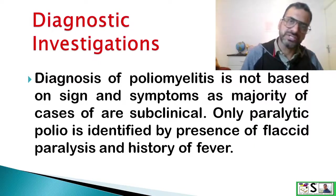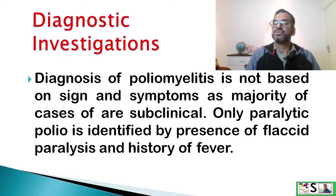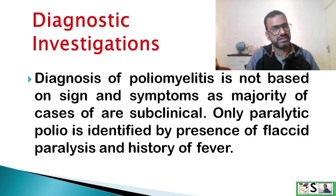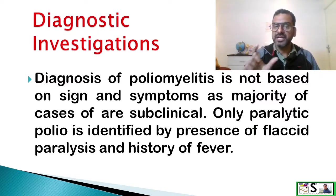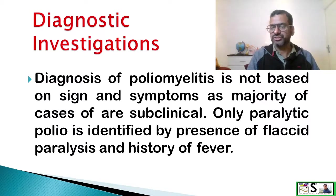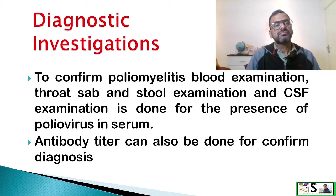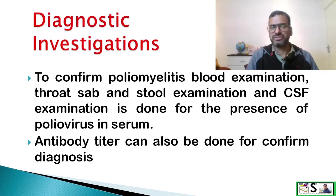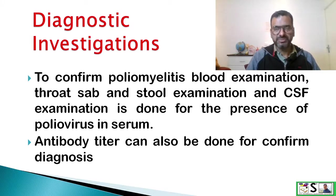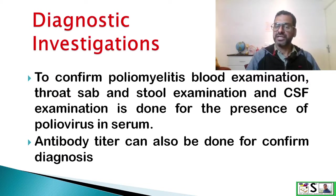What diagnostic investigations are done for polio? Diagnosis of poliomyelitis is not based on signs and symptoms because the majority of cases are subclinical. Only paralytic polio is identified by the presence of flaccid paralysis with a history of fever. To confirm poliomyelitis, tests are done which include blood examination, throat swab examination, stool examination, and CSF fluid examination. Antibody titer can also be done for confirmation of the diagnosis.